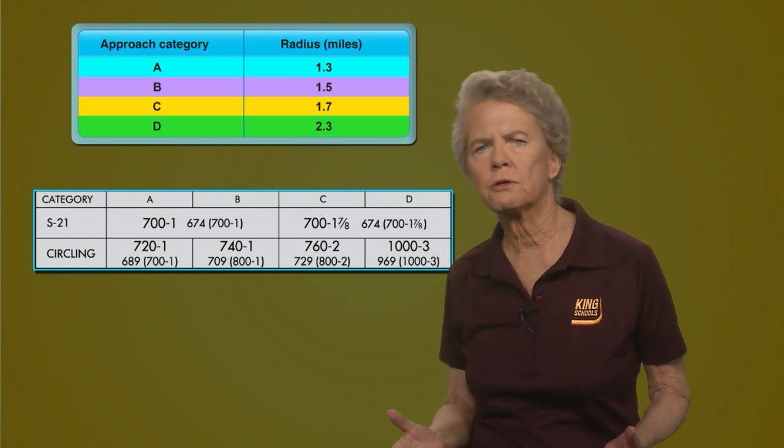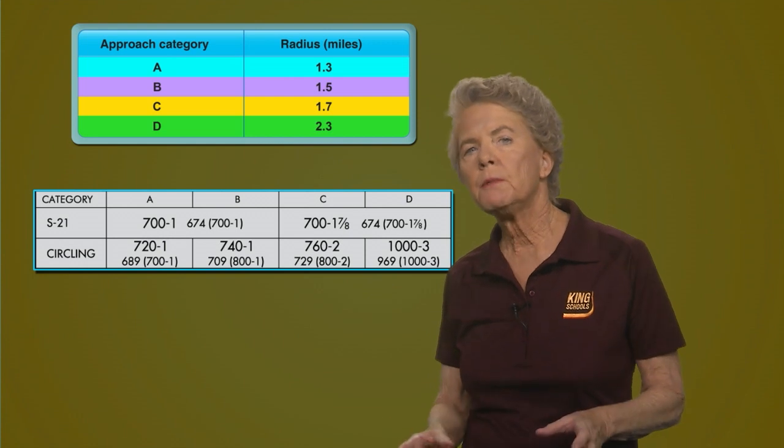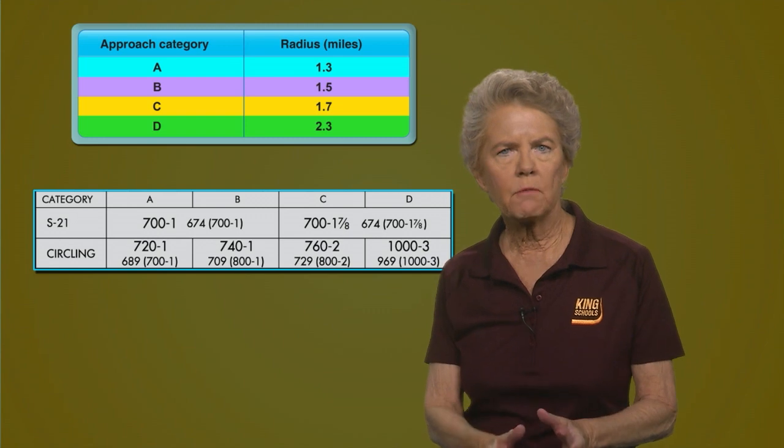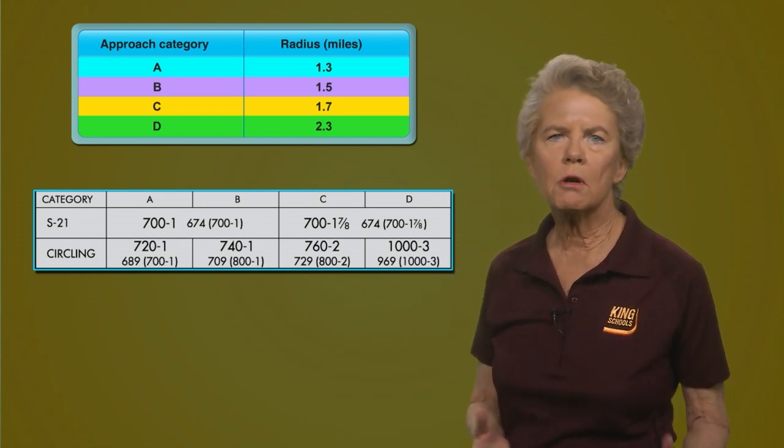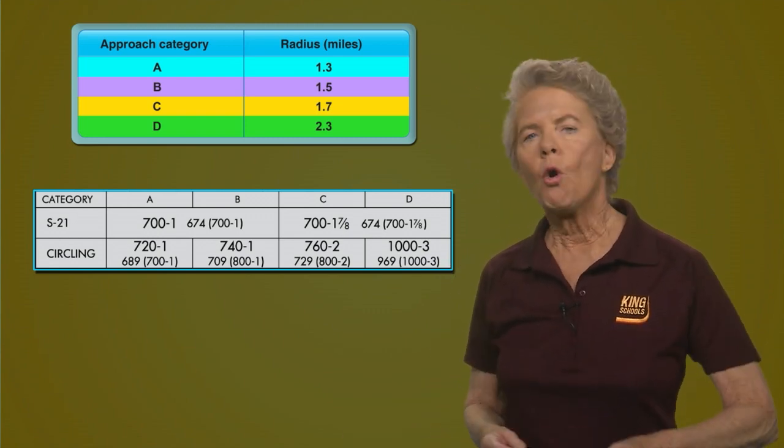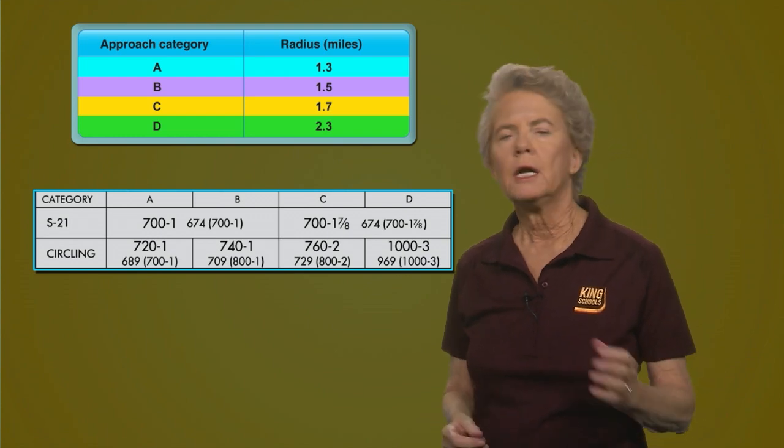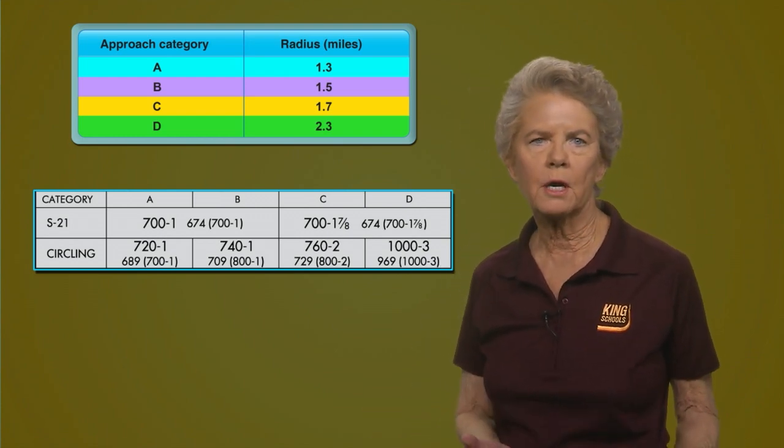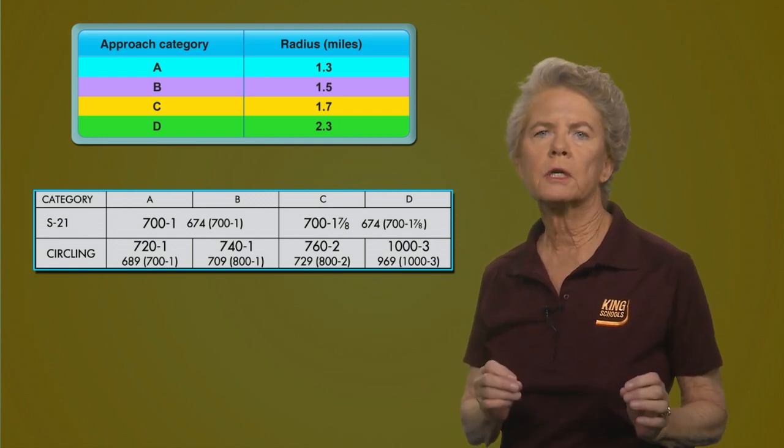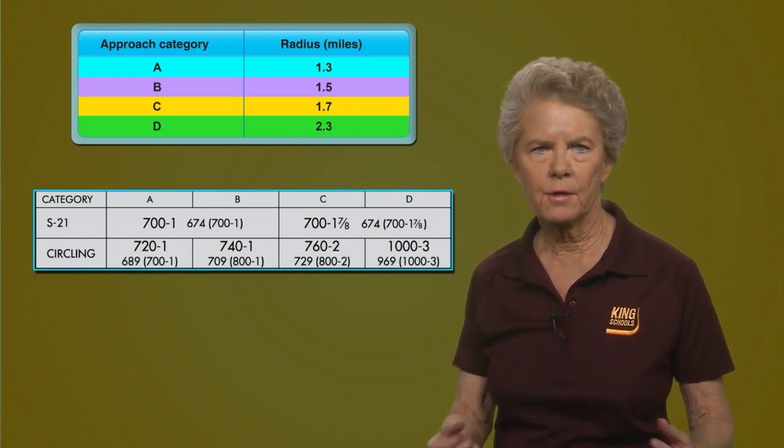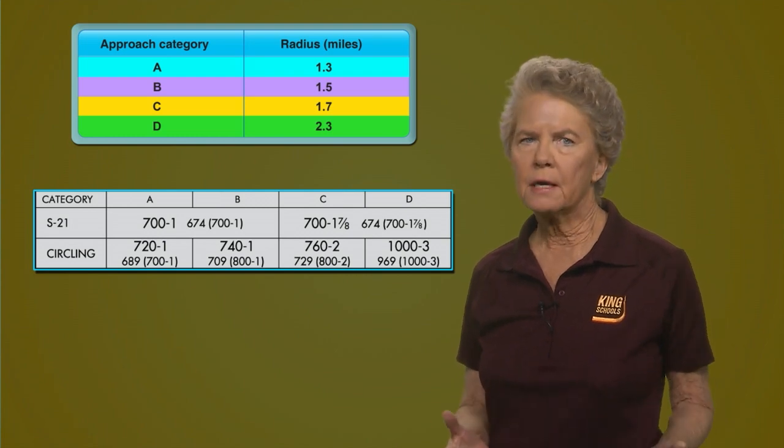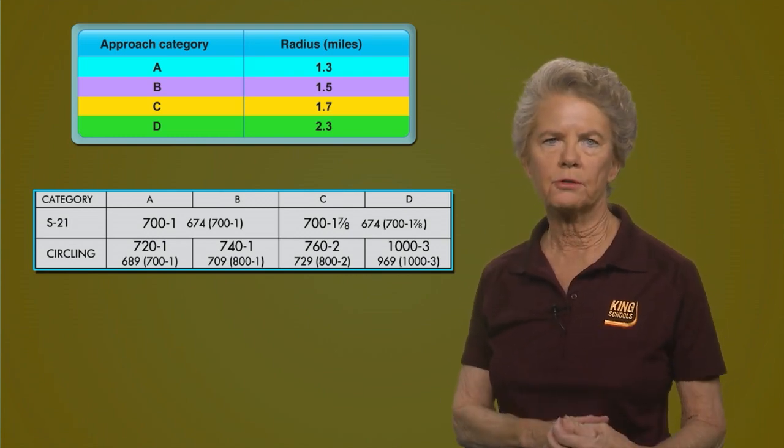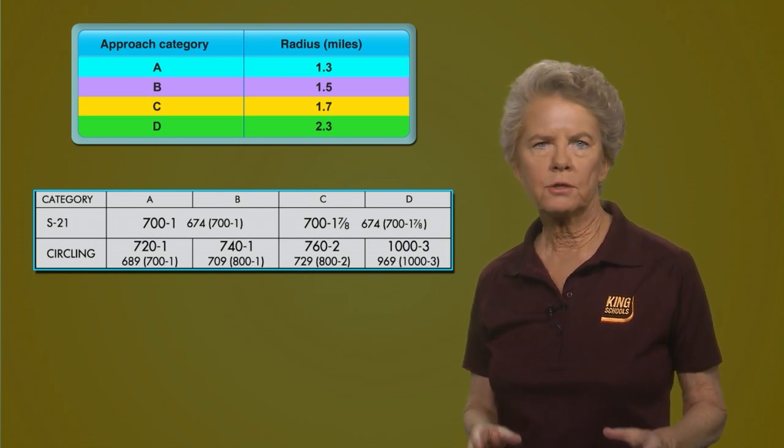Now, why would you want to circle in the first place? Well, maybe only one runway has an instrument approach to it, but you don't want to land on that runway because of a strong crosswind or a tailwind. Or maybe the runway is closed, either for construction or there's a disabled airplane on the runway. But for some reason, you want to circle and land on a runway other than 2-1. And in that case, you've got a higher altitude on this particular approach.